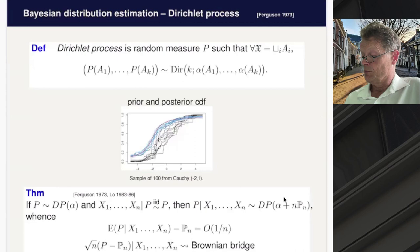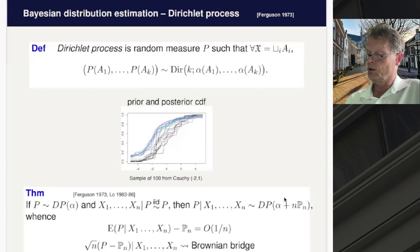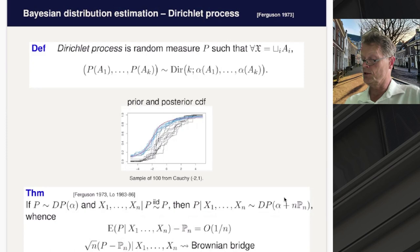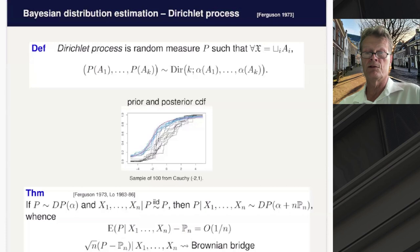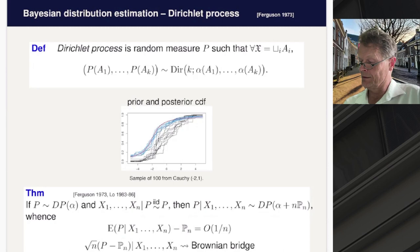The mean of the posterior distribution is almost the empirical distribution, up to an order 1/N term from alpha. Deviations between the posterior and the posterior mean — the fluctuations in the blue curves — are like a Brownian bridge, which are the same fluctuations as in the empirical distribution. This makes it exactly right to interpret the fluctuations among the blue curves as a measure of remaining uncertainty that would define correct confidence intervals in the frequentist sense.